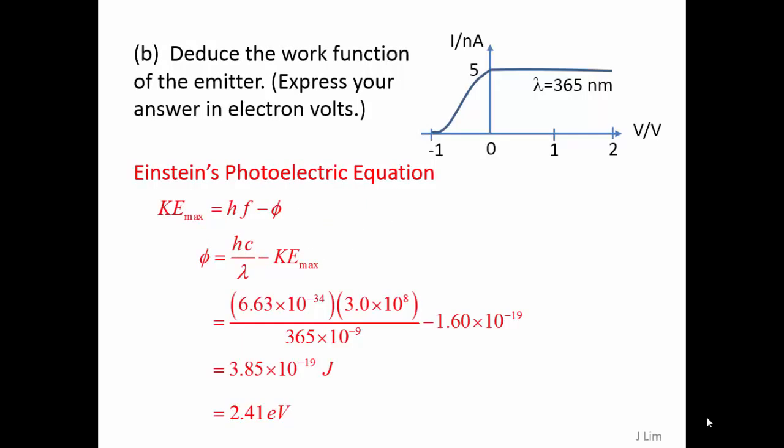Based on Einstein's photoelectric equation, KE max is given by hf minus the work function. Therefore, the work function is 2.41 electron volts.